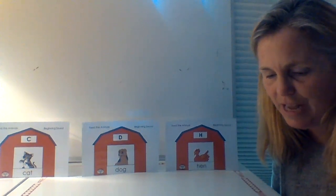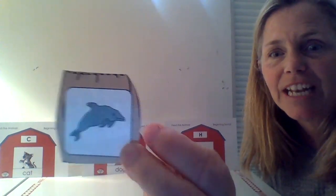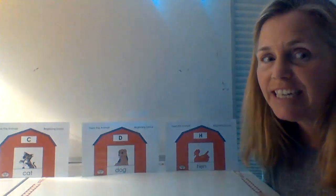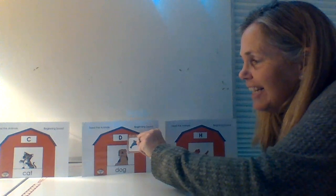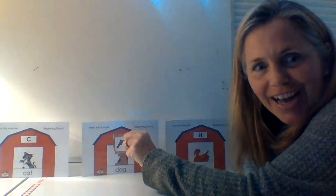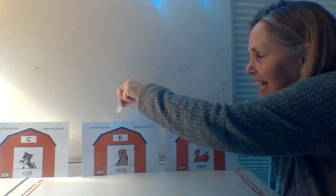Let's do another one. Here we go — we have a dolphin. D, dolphin. What sound do we hear at the beginning — d? Says the letter D. Good job. D, dolphin — it goes in our barn.